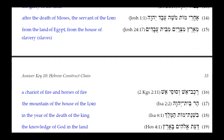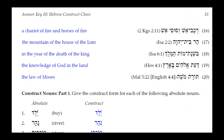Next: Rekev Esh — a segolate noun in construct — 'the chariot of fire.' And Sussei Esh — the Seri Yod on Sussei tells us it is masculine plural construct — 'and the horses of fire.' So we have 'the chariot of fire and the horses of fire.'